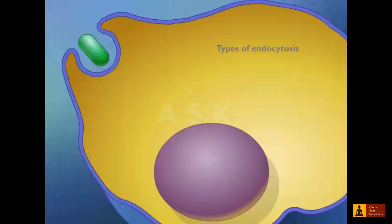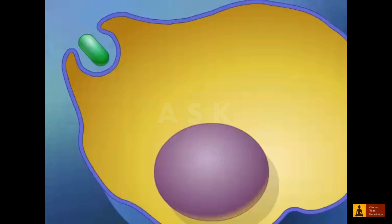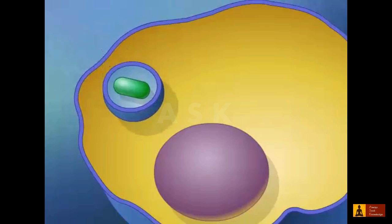Cells use three major types of endocytosis: phagocytosis, pinocytosis, and receptor-mediated endocytosis. If the material the cell takes in is particulate, such as a bacterium or a fragment of organic matter, the process is called phagocytosis.